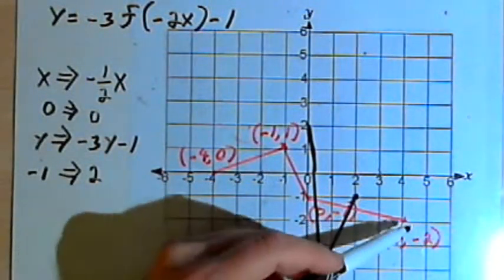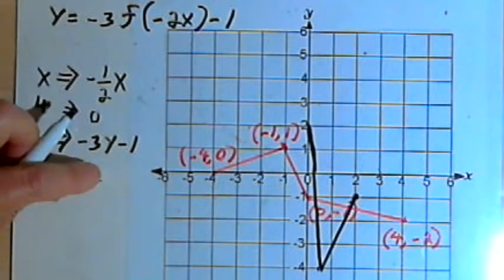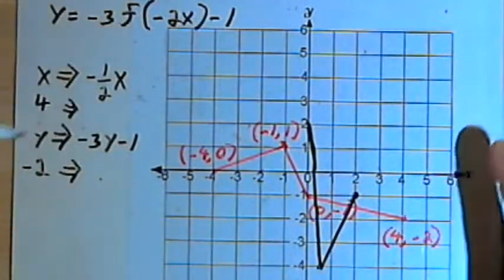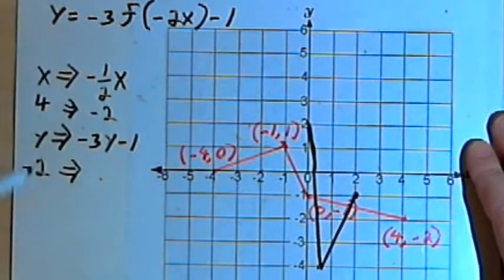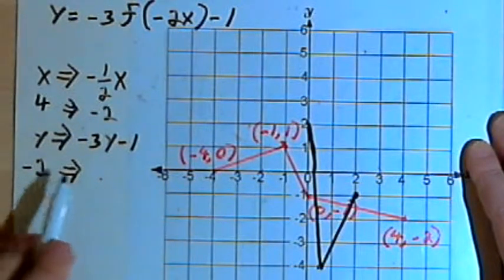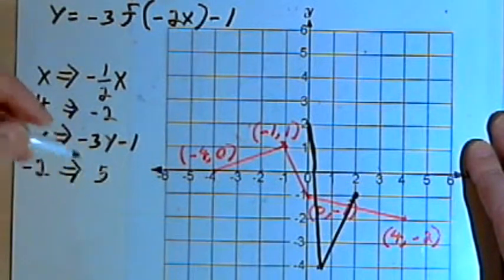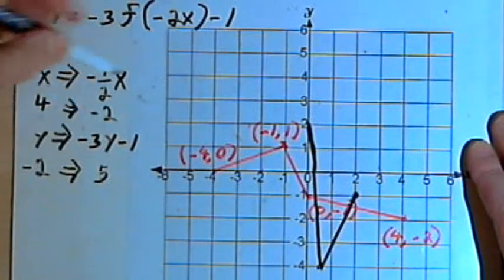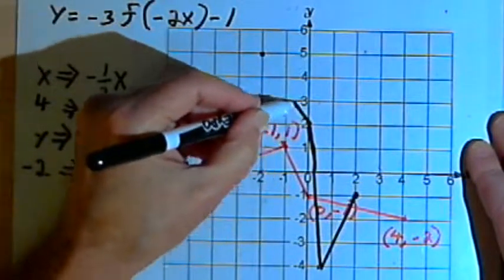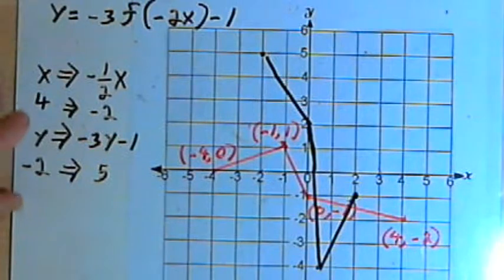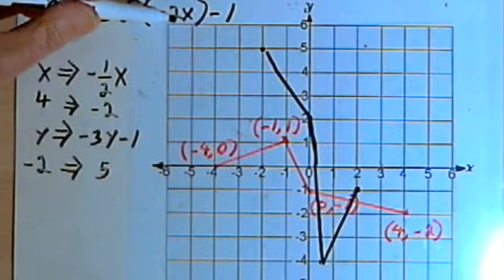The last point I've got is 4, negative 2. x is 4, y is negative 2. We'll take that 4 and multiply it by negative one half — that's negative 2. We'll take the y-coordinate, negative 2, and multiply that by negative 3, so that's positive 6, and subtract 1, which will be positive 5. So I should have a point at negative 2, 5 — that's here. I'll connect those, and there's my graph of y equals negative 3f of negative 2x minus 1.